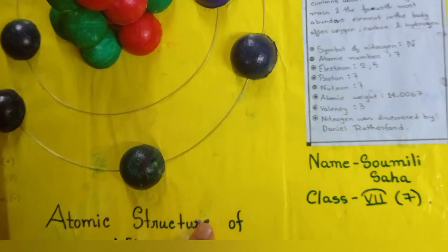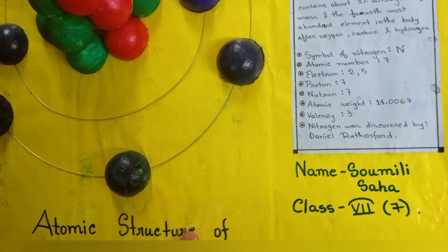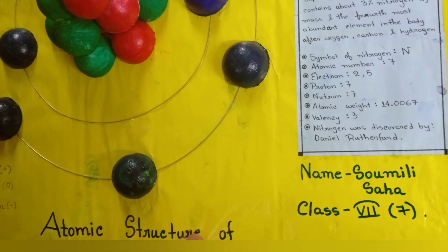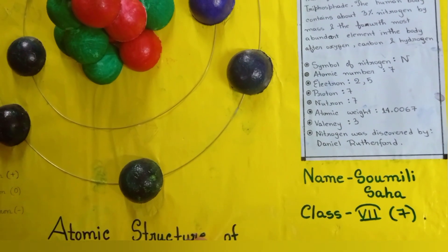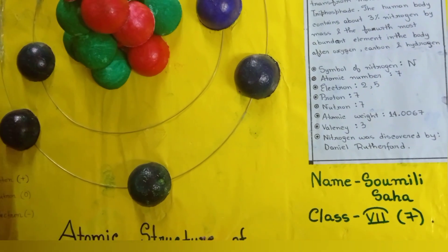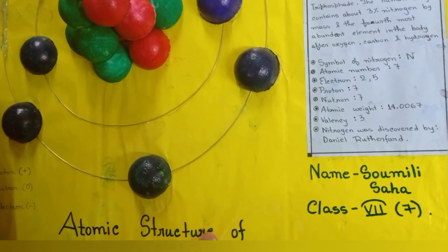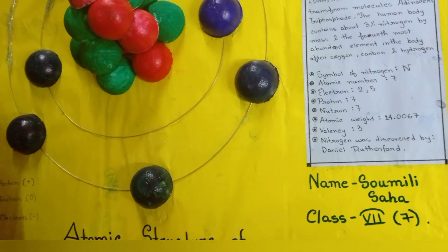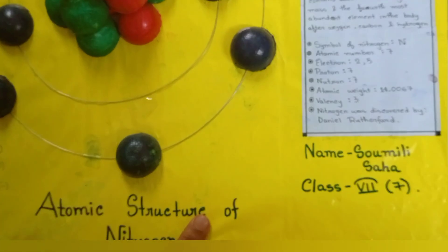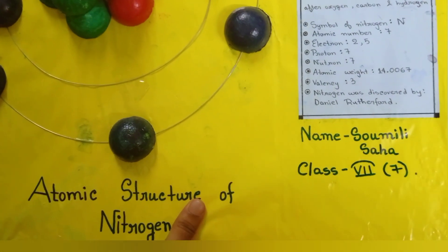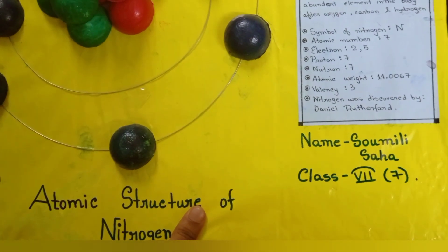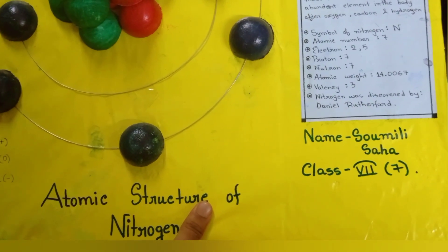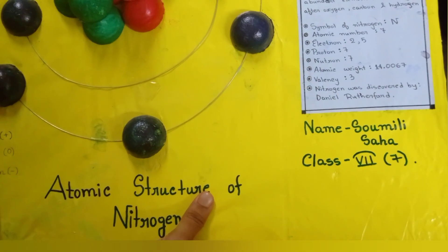The symbol of nitrogen is capital letter N. The atomic number is 7, the number of electrons is 7, number of protons is 7, and number of neutrons is 7. The atomic mass of nitrogen is 14.0067. The valency of nitrogen is 3. It was discovered by Daniel Rutherford.